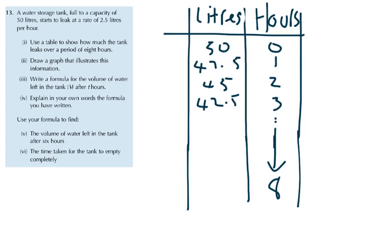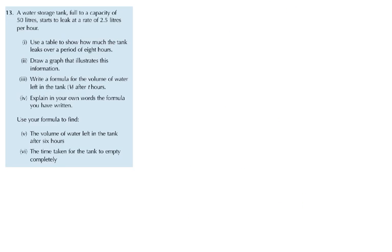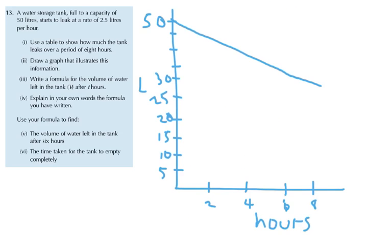The next thing it says is you need to draw a graph that illustrates this information. When it says illustrates this information, it's talking about the tank over 8 hours. Over 8 hours, we know from your table that it's going to lose 20 litres, because 8 multiplied by 2.5 is 20 litres. So that means it goes down from 50 litres down to 30 litres, and there's the line that comes straight down. That's a graph that illustrates that information.